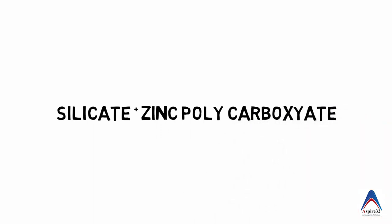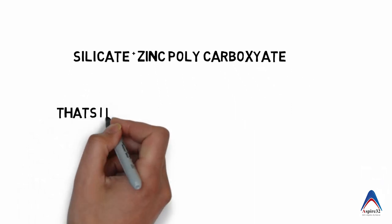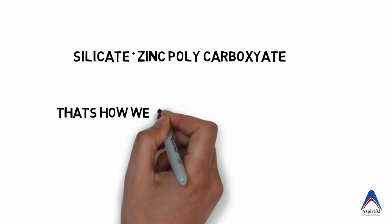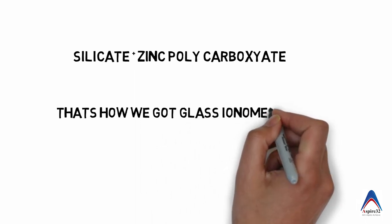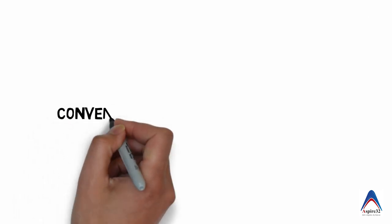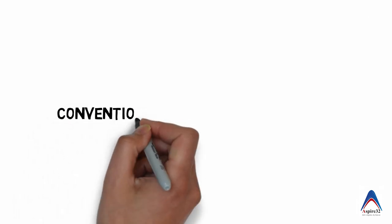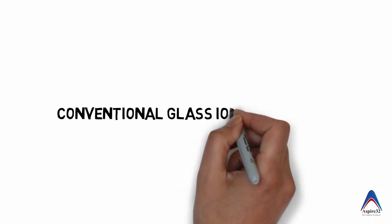The zinc polycarboxylate cement was not very good in aesthetics. So the researchers took the powder of silicate cement and the liquid of zinc polycarboxylate cement and came with glass ionomer cement, which was very popular and even today is used very routinely in day-to-day practice.